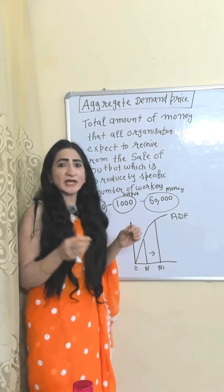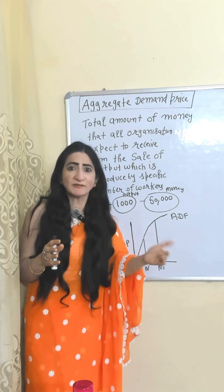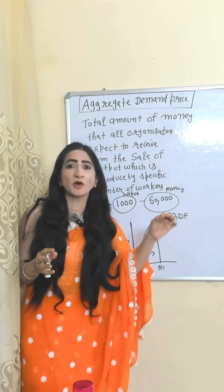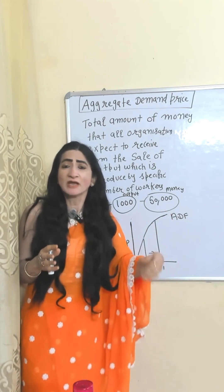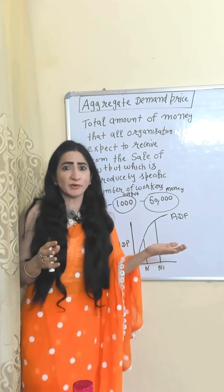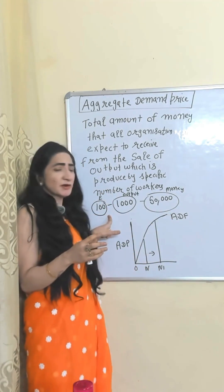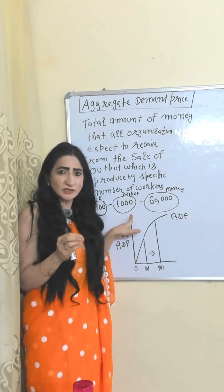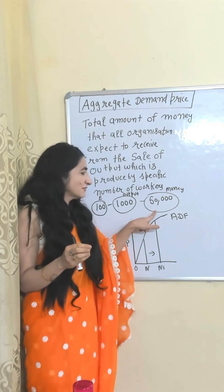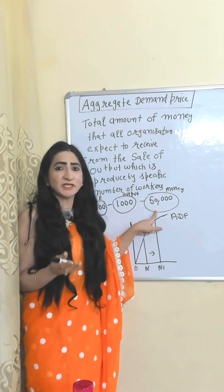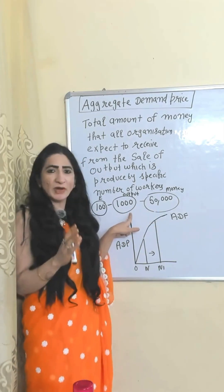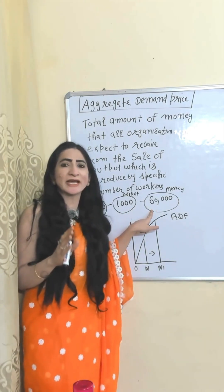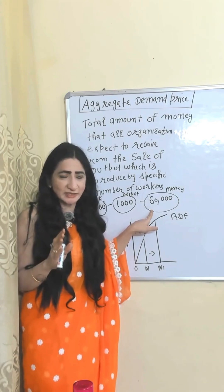Aggregate demand price is the total amount of money which businesses expect to receive from the sale of output produced by a specific number of workers. For example, 1,000 workers produce 1,000 units and businesses expect to receive 50,000 rupees from the sale of those 1,000 units. This 50,000 rupees will be called the aggregate demand price.